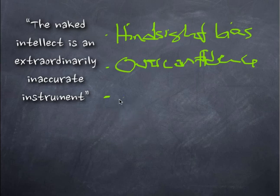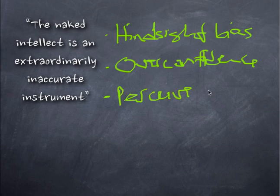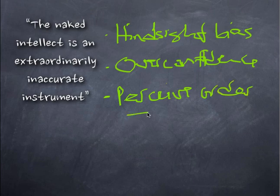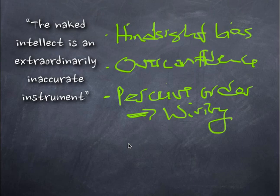And then the last one is perceiving order in random events. The thing to keep in mind, particularly with this one, is it has to do with wiring. We are wired for perceiving order. The problem is that we oftentimes will see it when it doesn't exist. And that's part of each one of these. So let me take apart each one and then we'll talk in a minute about the nature of each.